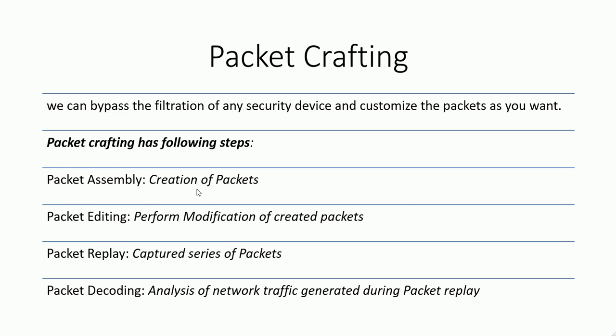Packet assembly is all about the creation of packets — first you create the packets for the attack. Then we have packet editing, in which you perform modifications if you want to change the packet scenario. Then we have packet replay, which is all about a series of packets that have been captured. And the last is packet recording, where you can analyze the network traffic generated during the packet replay step.